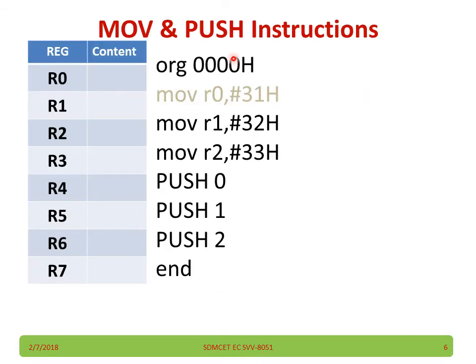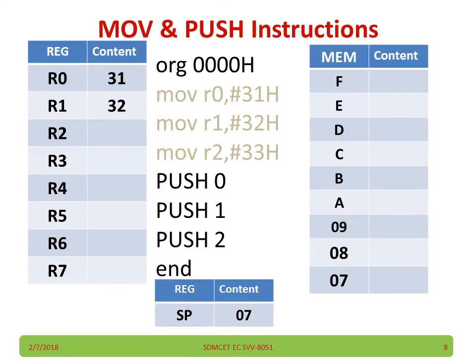Take this example — a set of instructions and how they work. Move R0, #31h: 31 will be moved to R0. So R0 becomes 31, R1 becomes 32, R3 becomes 33.